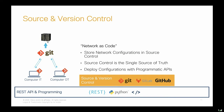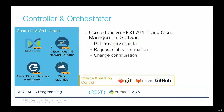Moving on to control and orchestrators — examples include DNA Center and Cisco Industrial Network Director, both with extensive REST APIs. Also, Cisco Kinetic Gateway Management and Cisco vManage for SD-WAN manage your industrial routers and also have REST APIs. You can pull inventory reports, request status information, and change configurations — all possible with the power of these Cisco management software REST APIs.